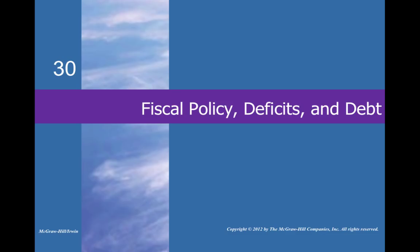All right, everybody here. We're going to start on chapter 30, which is about fiscal policy, deficits, and debt. We'll go through the beginning in relative detail and then pretty quickly move through the stuff at the end because it's a little bit less relevant for the AP test, a little bit more relevant for life, but you can do a lot of that work on your own.